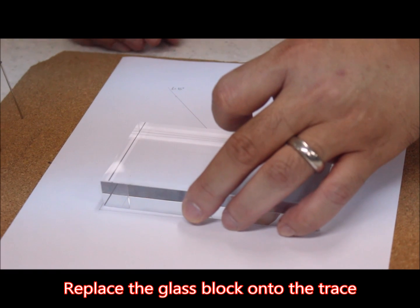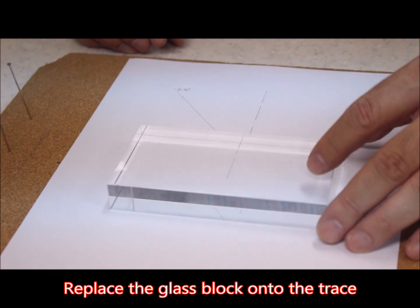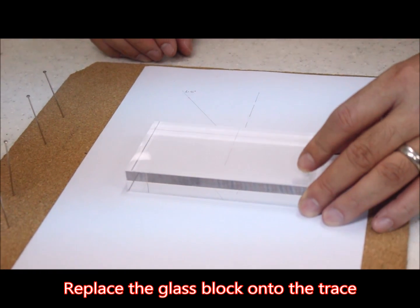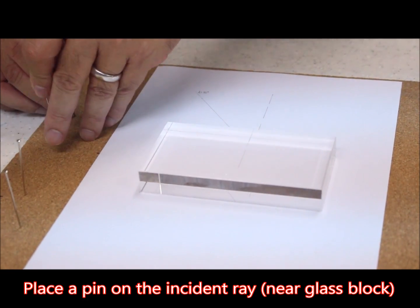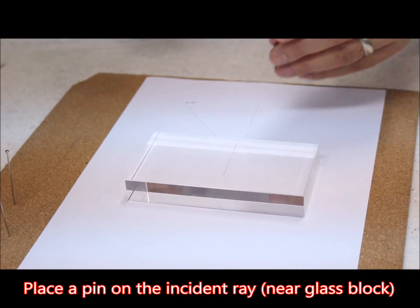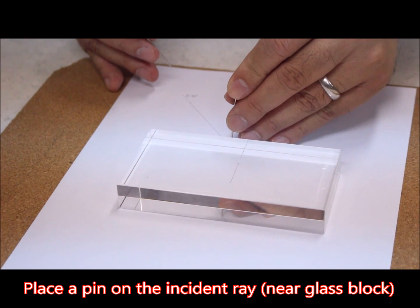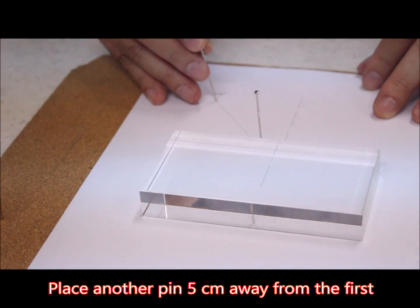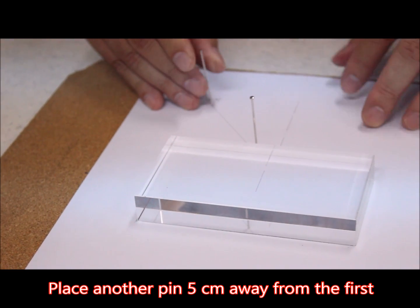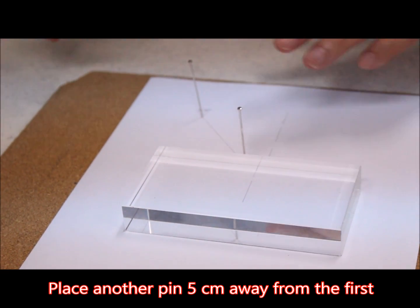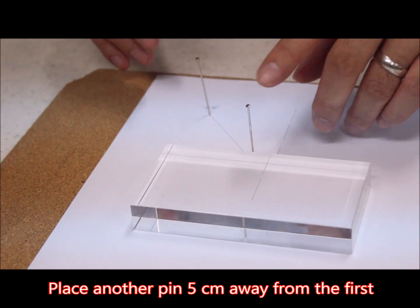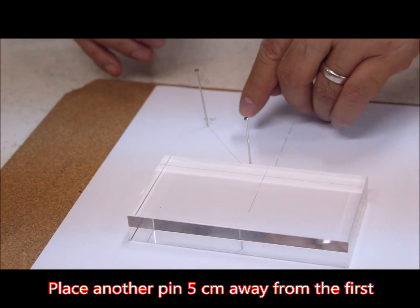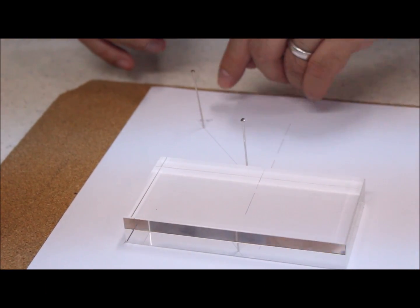Place the glass block fitting the outline. Take two pins - place one pin nearer to the glass block and another pin further away. The distance should be at least 5 cm apart, and you have to put them along the line of the incident ray.